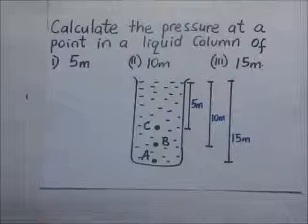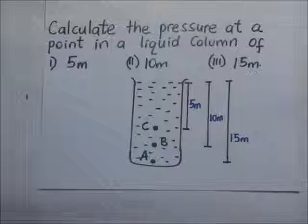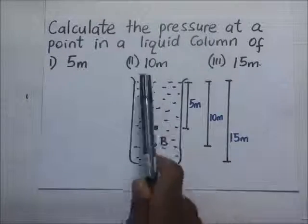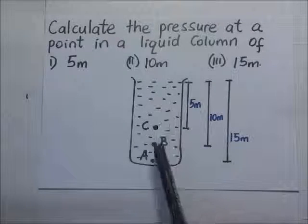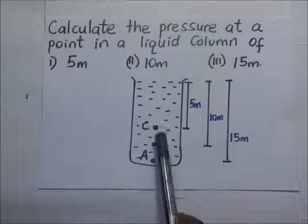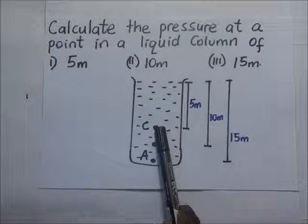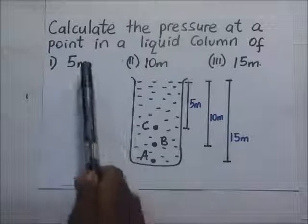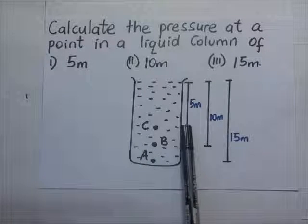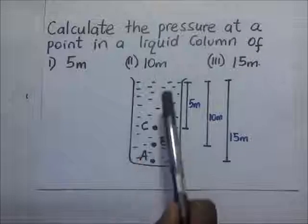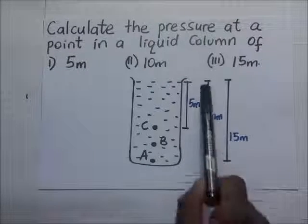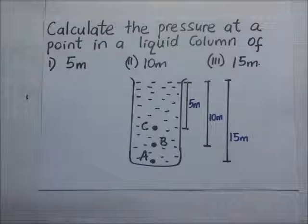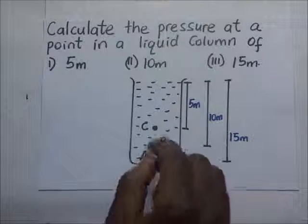We have a question right here. This is a liquid column. This could be water. Yes, this is water. This is a liquid column—it is water with points A, B, and C. We are required to calculate the pressure at the point in this liquid column or in this water column at five meters, which is at point C, then at 10 meters, which is at point B, then at point A, which is 15 meters. So let's try and find the pressure at all these three points A, B, and C.